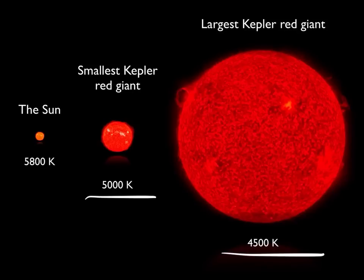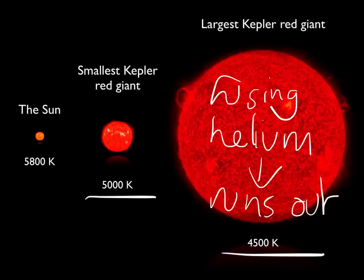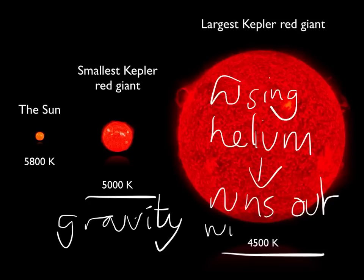This red giant phase will last for about a billion years, during which the star is fusing helium. But this suffers from the same problem as the main sequence star — one day the helium runs out. And again, the pressure pushing the star outwards against gravity will stop because there's no fusion going on, so gravity wins and the star will collapse.